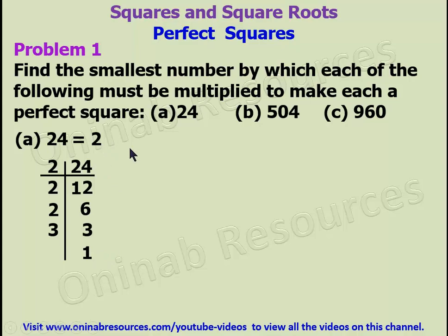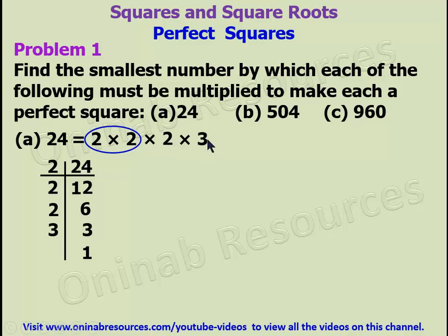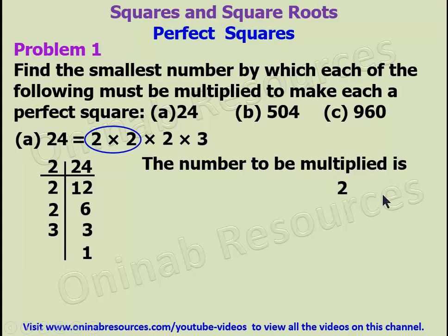So we now have 24 as 2 times 2 times 2 times 3. Now, we are going to group the same numbers into pairs. The first two 2s are grouped together, but this remaining 2 and the 3 are each unpaired. So the number to be multiplied is 2 times 3, which gives us 6. Therefore, 24 times 6 gives us 144, and 144 is a perfect square.